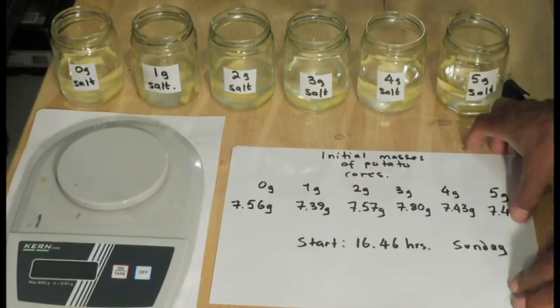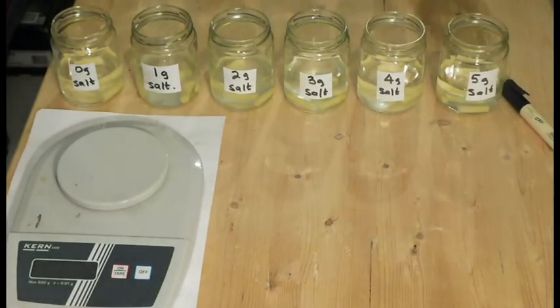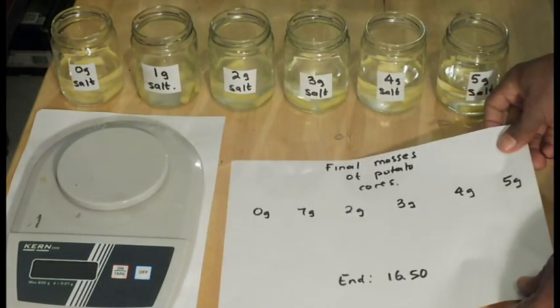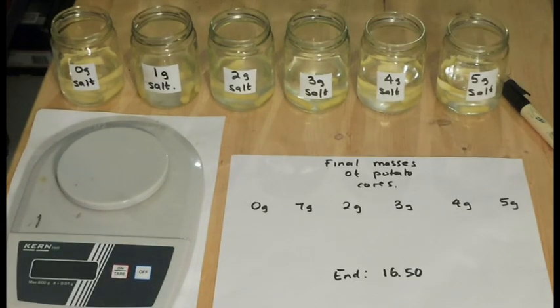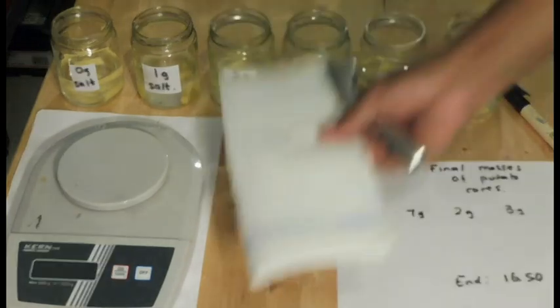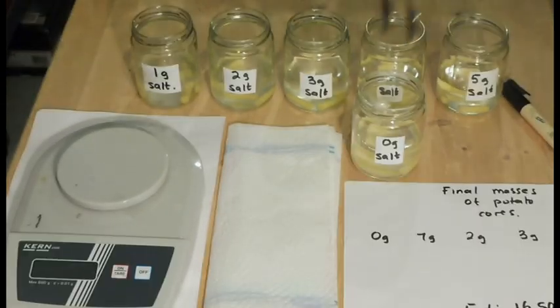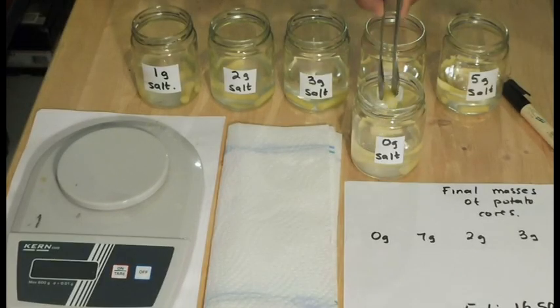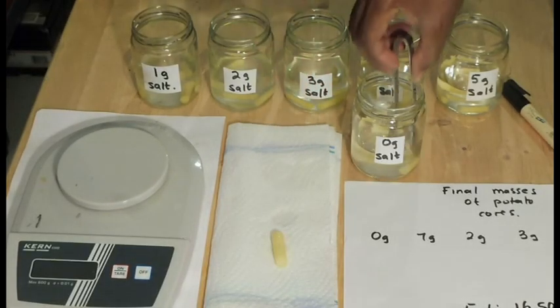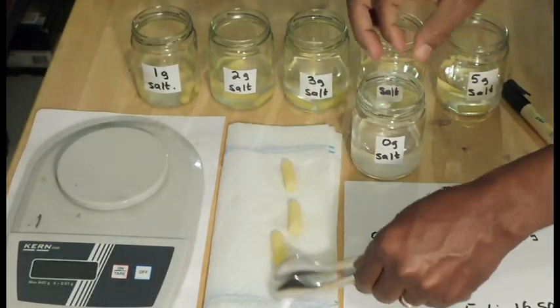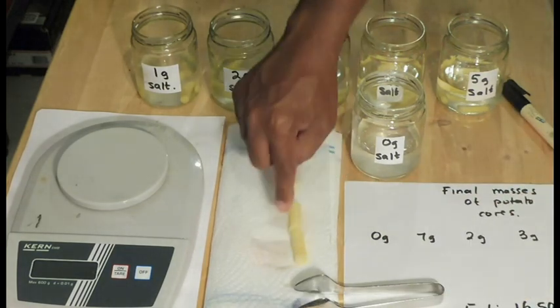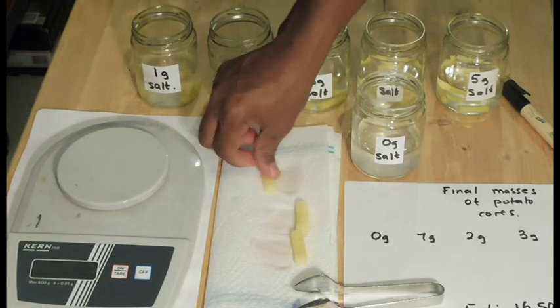After 24 hours, it's time to check the results. We will need a new datasheet. It is also fine to record initial and final masses in one table. Gently remove the potato core sets and place them on a paper towel. This is to dry the cores so that the water outside the cores is not part of measurement. We are only interested with the amount of water inside the cores.